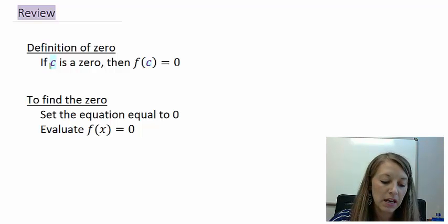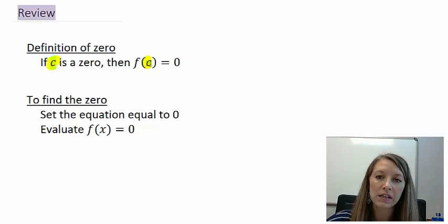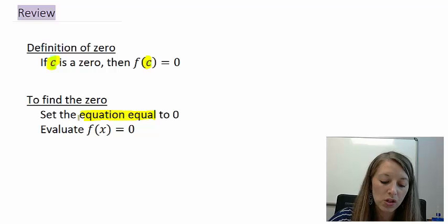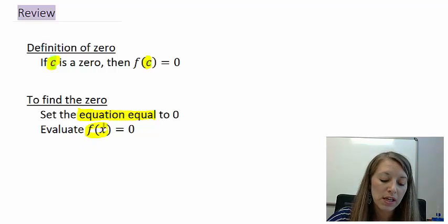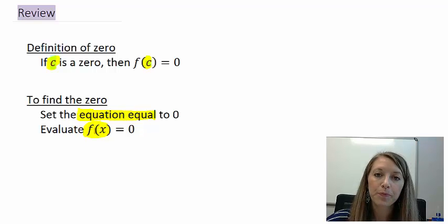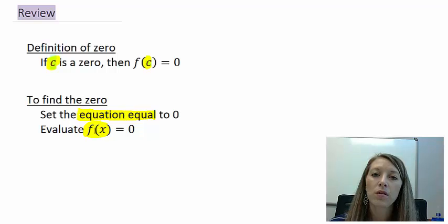If c is a zero, then that number when plugged into the function is equivalent to zero. So if c is a zero, then f(c) is equal to zero. The way that we figure out what our zeros are is we set the whole entire equation equal to zero like we've done numerous times before. So we set f(x) equal to zero.